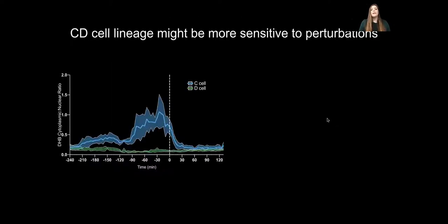The CD lineage is special because one cell differentiates whereas the sister cell goes on to divide again. In wild-type animals we can see both cells exiting CDK activity low, and the C cell immediately begins to increase in CDK activity before it divides again, while the D cell remains low.